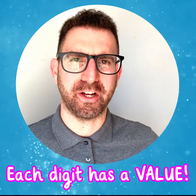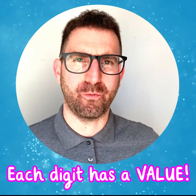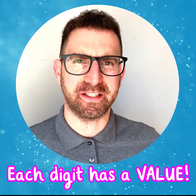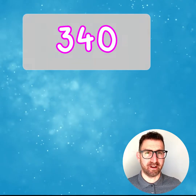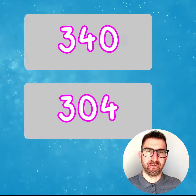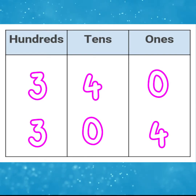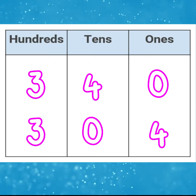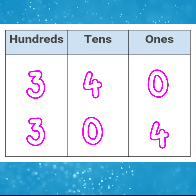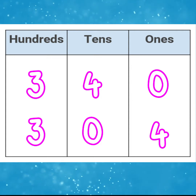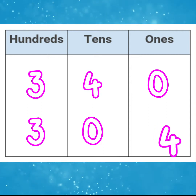Numbers to 1000 can be shown in a variety of ways. It's important to understand the value of each digit as each part of a number. For example, we do not want to confuse 340 and 304. Both numbers have 300 but the 10's and 1's are different. 340 is greater than 304 because 4 tens is greater than 4 ones.